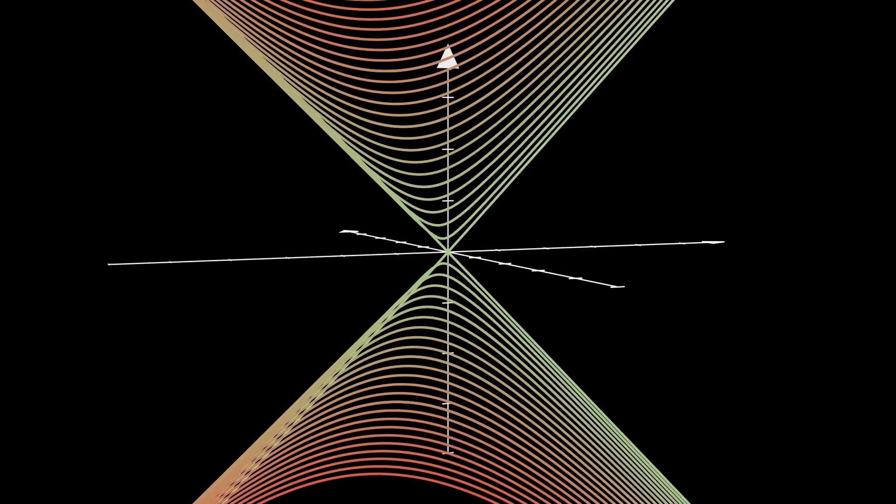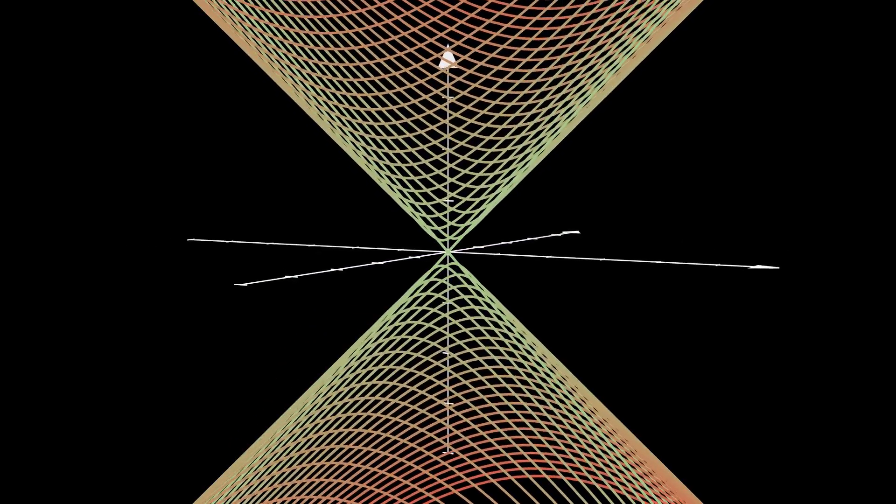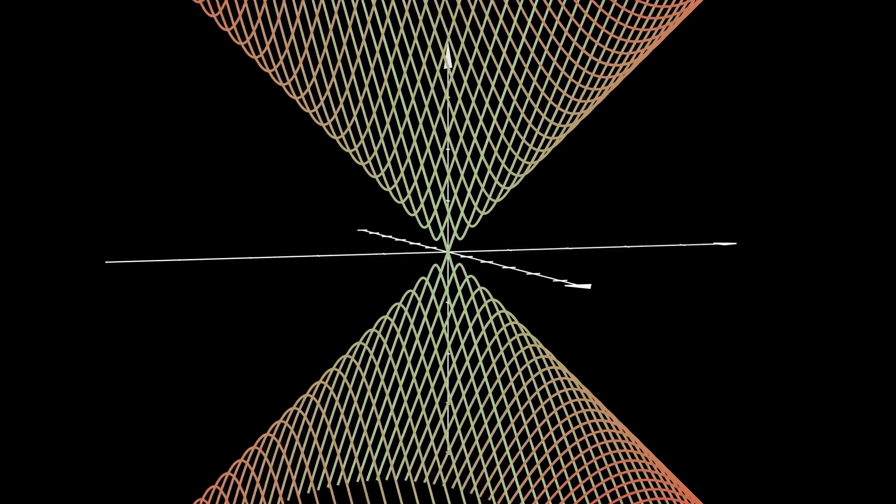And a negative fixed leg will also satisfy our equation, so let's include those as well. Altogether, these build a double cone.